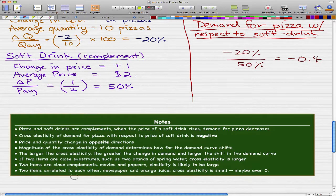Now when two items are unrelated to each other, so let's take newspaper and orange juice, then the cross elasticity is small because they're unrelated items. So if the price of one item changed, let's say the price of newspaper just shot up, well what does that have to do with orange juice? Nothing. So that's why the cross elasticity is small. And maybe it could even be zero.